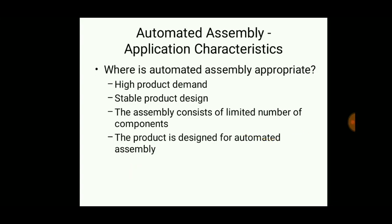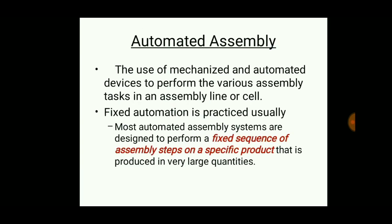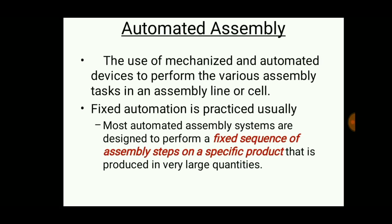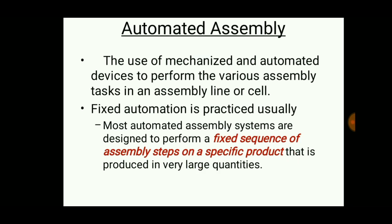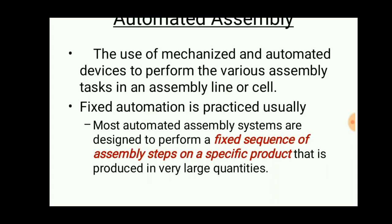Automated assembly system is a system that performs assembly operations automatically. There are two types of automation: fixed automation and variable or flexible automation. In fixed automation, the assembly operations are fixed - they cannot be changed or modified.